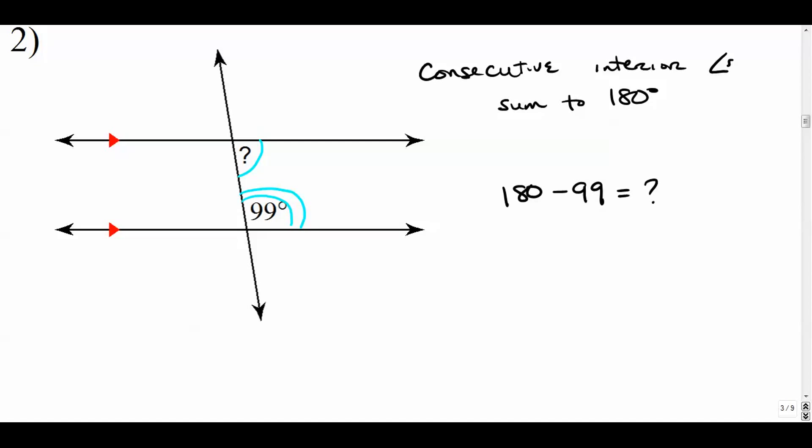So the question mark in this case, all we need to do is take 180 minus 99 to get our question mark. And that's going to be, let's see, 81. 81 plus 99. Let's add that together. It's 170 plus another 10. Yeah, that works. And we'll put a little degree sign on there as well.